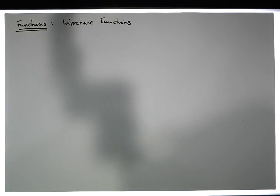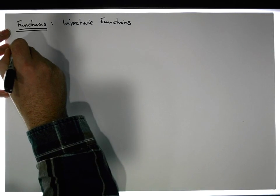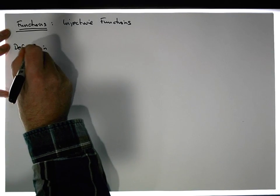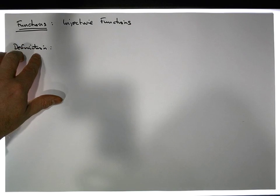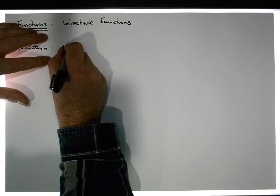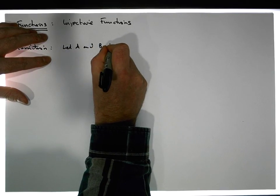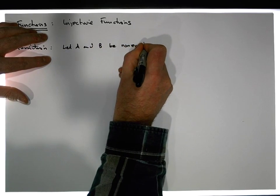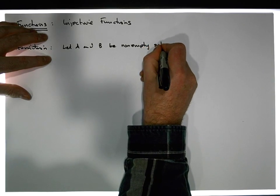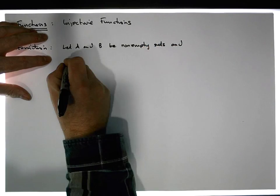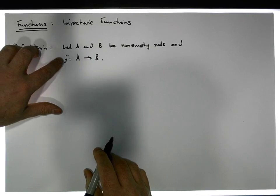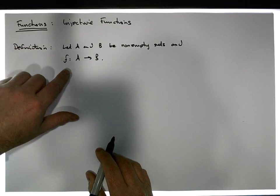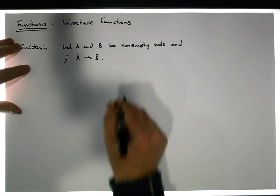The first question we should ask ourselves is: what is an injective function? We have a definition for that. First of all, we need to have a function that maps domain values into co-domain values, so we need to define two sets. Let A and B be non-empty sets, and let f be a mapping from A into B.